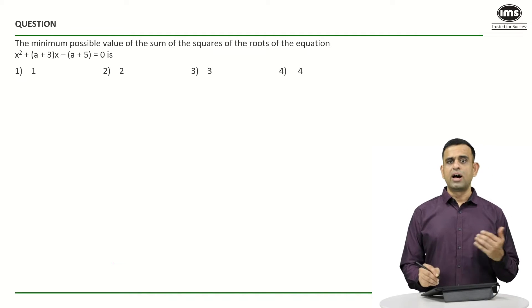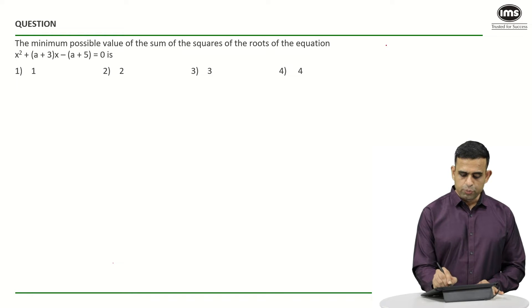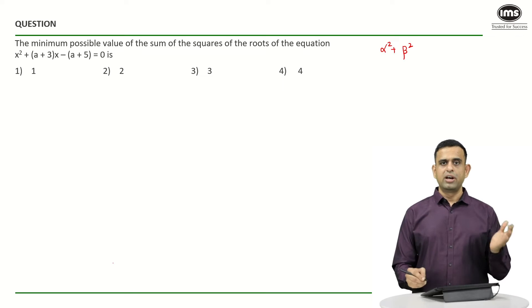So if I take the roots as α and β, the objective is to minimize α² + β², where α, β are my roots.